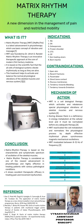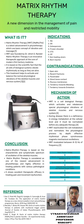What are the contraindications of Matrix Rhythm Therapy? These are the conditions in which Matrix Rhythm Therapy is contraindicated and not given. These include: open skin, recent fractures, pacemaker, direct bone contact, mucous membrane, tendency towards bleeding, and tendency towards embolism.